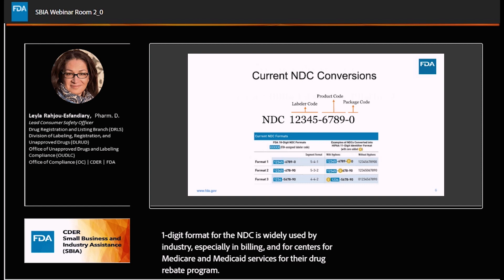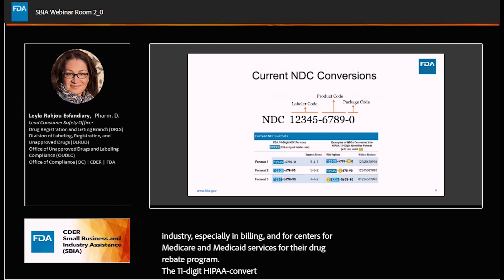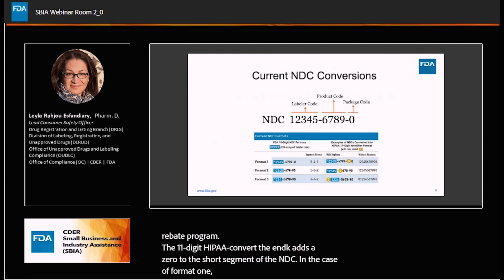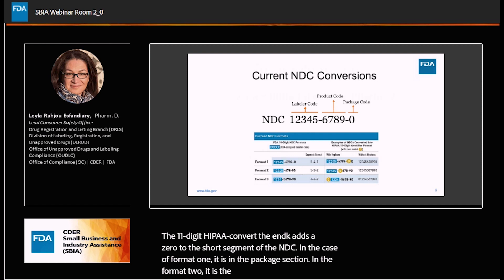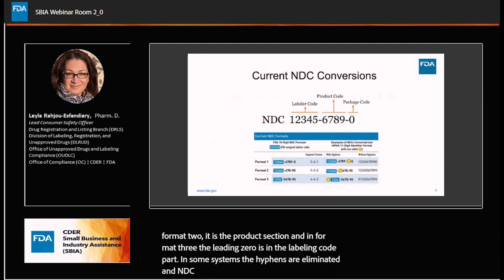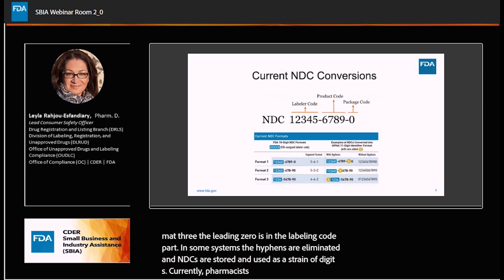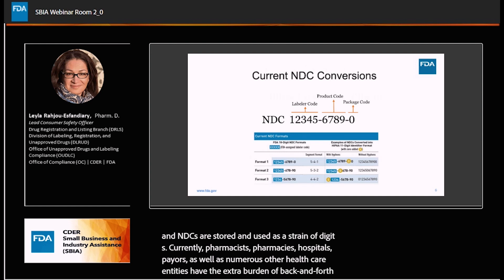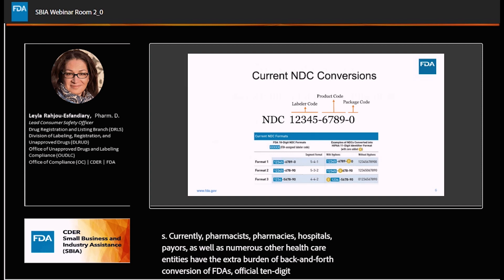The 11-digit HIPAA-converted NDC adds a leading zero to the short segment of an NDC. In format one, it is in the package section; in format two, it is the product section; and in format three, the leading zero is in the labeler code part. In some systems, hyphens are eliminated and NDCs are stored as a string of digits. Currently, pharmacies, hospitals, payers, and numerous other healthcare entities have the extra burden of back-and-forth conversion between FDA's official 10-digit NDC format and HIPAA's 11-digit format.